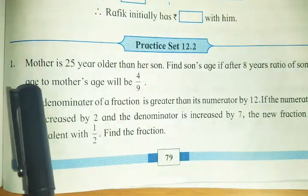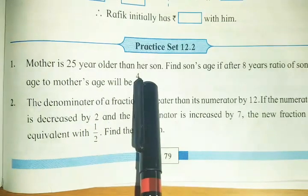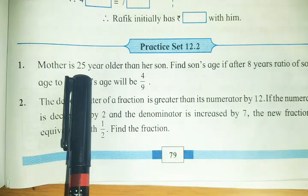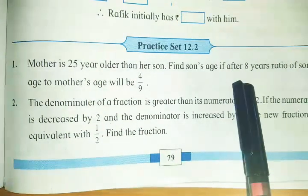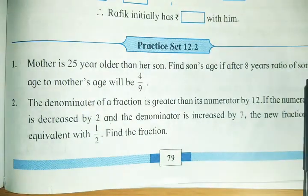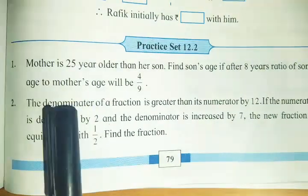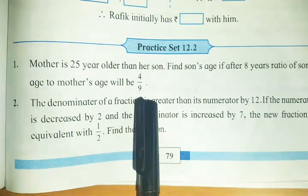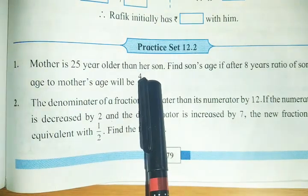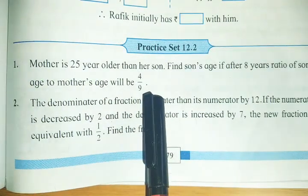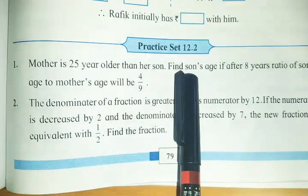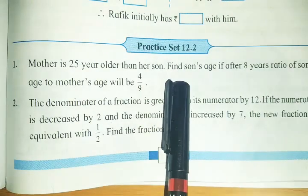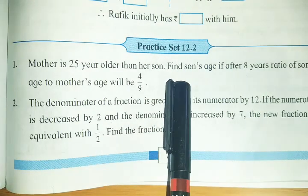The question states that mother is 25 years older than her son. That means how many years older is the mother than the son? 25 years. If after 8 years, ratio of son's age and mother's age will be 4 upon 9. What do we need to find out? Find son's age, meaning the son's present age, we need to find out.